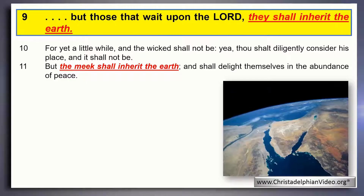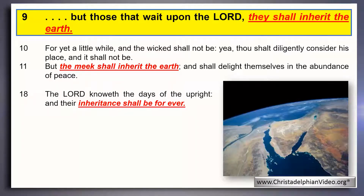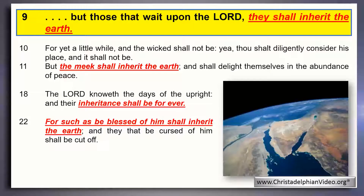Verse 18 says: 'The Lord knoweth the days of the upright.' He knows of us — he won't forget us, even when we're in the dust of the ground for years. Abraham, Isaac, and Jacob — the Lord Jesus spoke of them in Luke 13; they've been dead for thousands of years, but they haven't been forgotten of God. They pleased God in their days and are remembered of him. In answer to the question 'are there few that be saved?' — few in each generation, but a multitude overall. We may be few now, but in the kingdom there's a few from every generation.